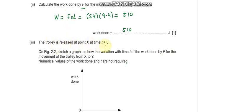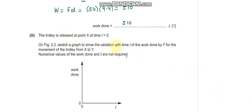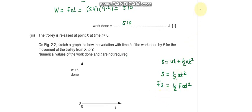Part 3: the trolley is released at point X at time t = 0. Sketch a graph showing the variation with time t of the work done by force f. Analysing the equation s = ut + ½at², with initial velocity 0, this reduces to s = ½at². Multiplying both sides by f, work done equals ½fat², so work done is directly proportional to t squared. This means the graph is a parabolic curve.